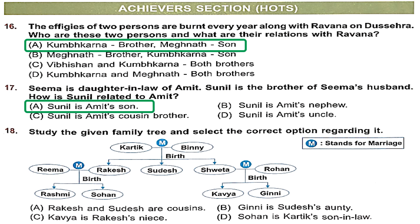Question 18: Study the given family tree. Karthik and Bini have children Rakesh, Sudesh and Shweta. Shweta is married to Rohan and has Kavya and Gini as children. Rakesh is married to Rima and has Rashmi and Sohan. Option A — Rakesh and Sudesh are cousins: incorrect, they are siblings with the same parents. Option B — Ginny is Sudesh's aunt: incorrect, Ginny is Sudesh's niece. Option C — Kavya is Rakesh's niece: correct, because Rakesh and Shweta are siblings, so Kavya, daughter of Shweta, is Rakesh's niece. Option C is the right answer.